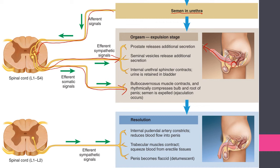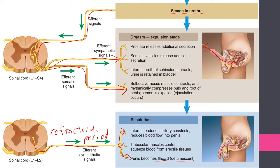Then sympathetic signals continue, but at this point they constrict the arteries and the penis becomes flaccid or detumescent. The sympathetic nervous system enforces a refractory period — the man has a period of time, ranging from a few minutes to a few hours depending on age (the older you are, the longer your refractory period), during which he cannot get erect again or have another sexual response cycle.